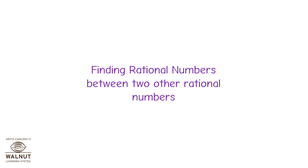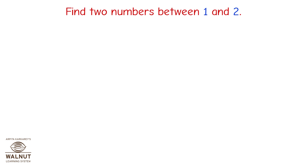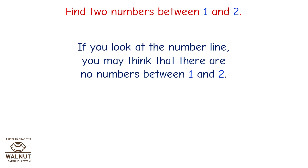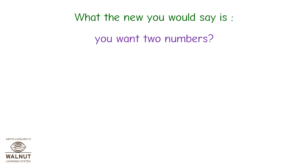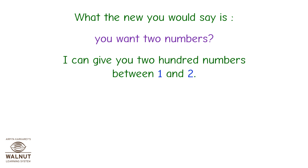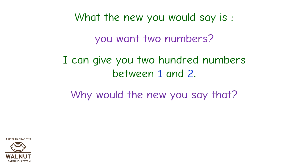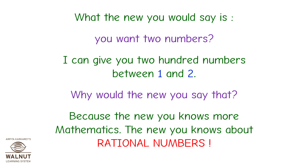Finding rational numbers between two other rational numbers. Find two numbers between 1 and 2. If you look at the number line, you may think that there are no numbers between 1 and 2 — well, it's okay for the old you to think that way, since the old you only knew about natural numbers, whole numbers, and integers. What the new you would say is: you want two numbers? I can give you 200 numbers between 1 and 2! Because the new you knows more mathematics — the new you knows about rational numbers.